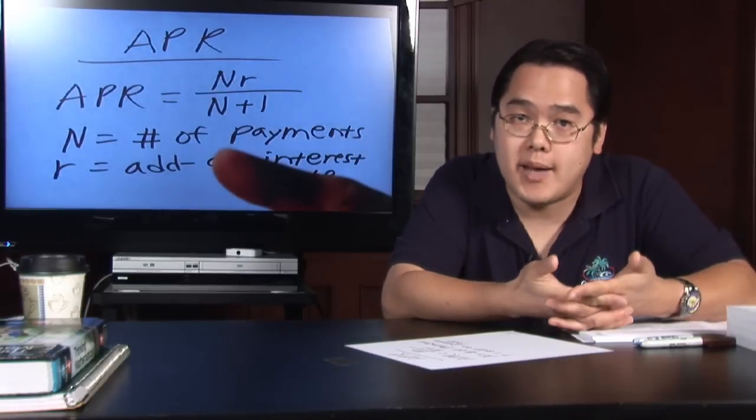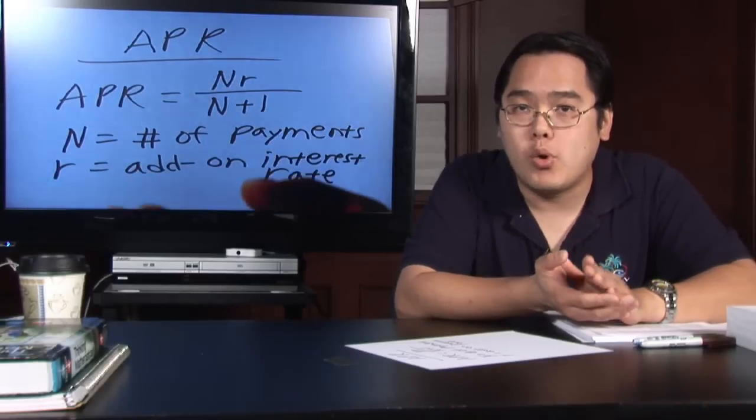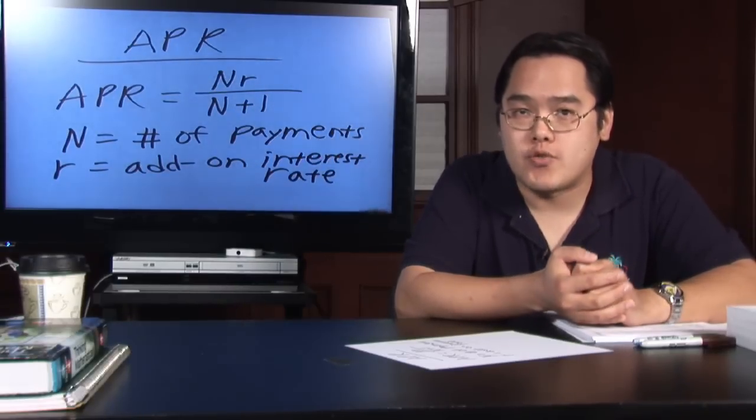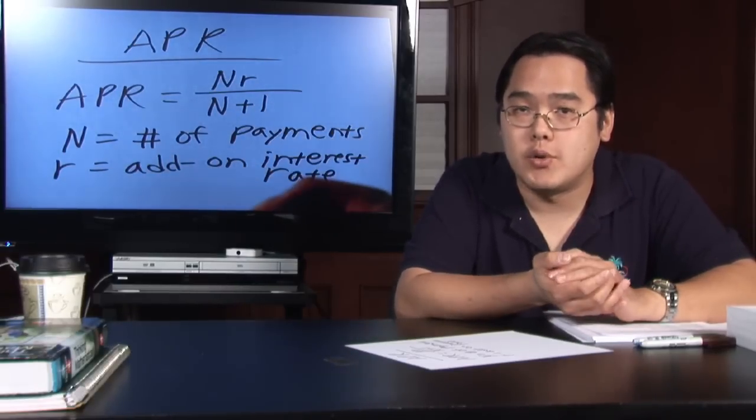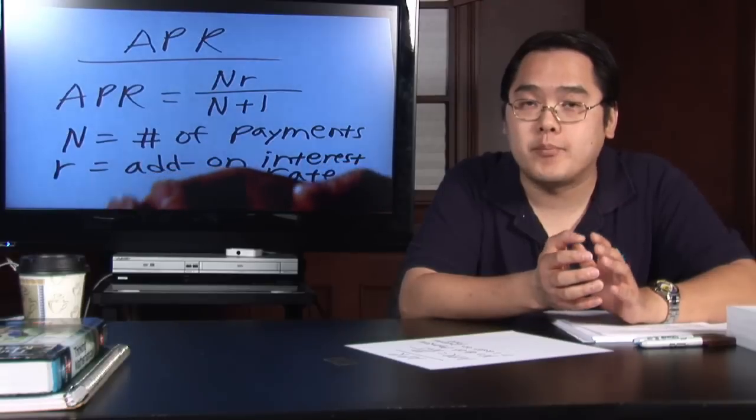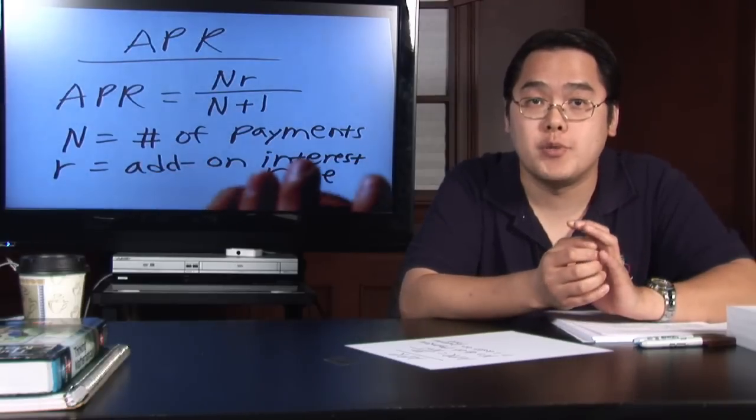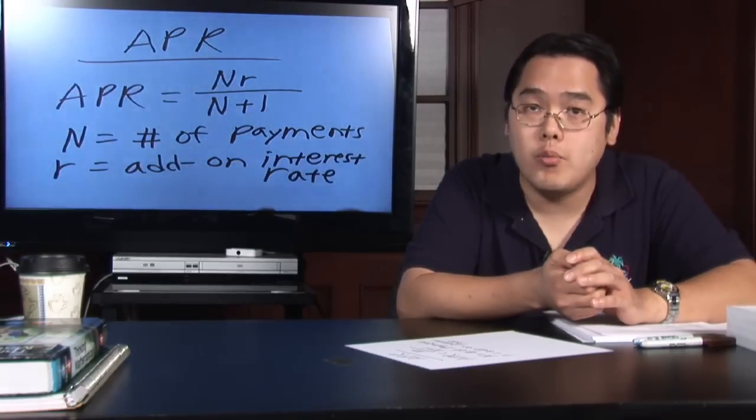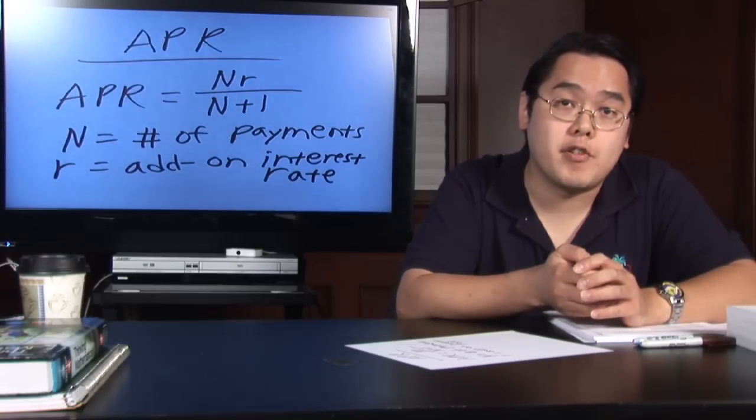Now, what is that? There are actually a couple things involved. Number one, there is the add-on interest rate, denoted R, which involves taking a certain percentage of how much you're financing, whether you're buying a car or a home. What's also involved is the number of payments.